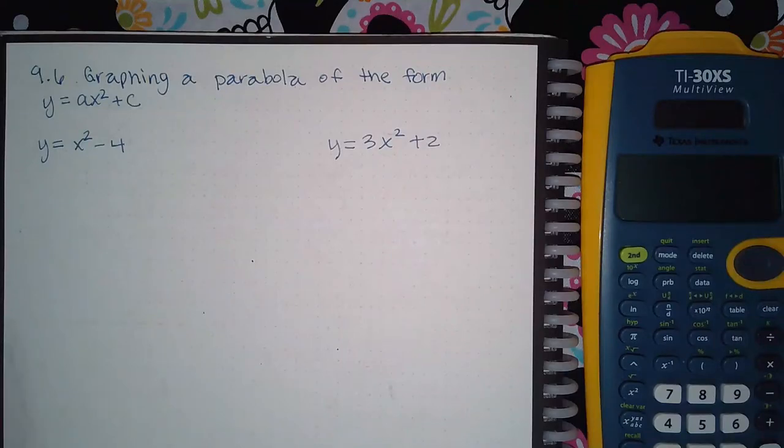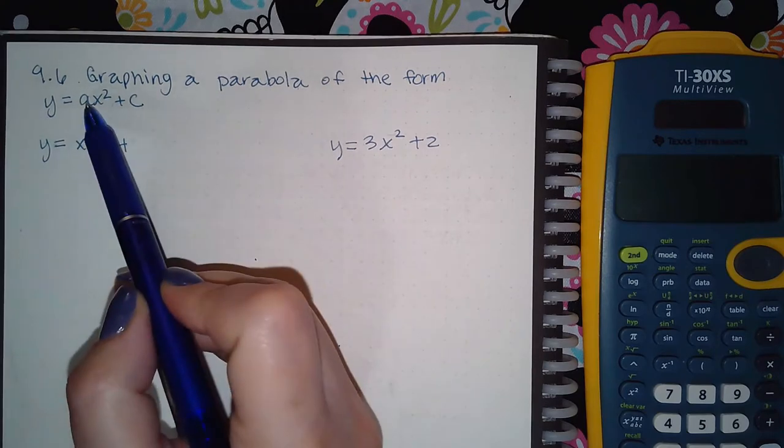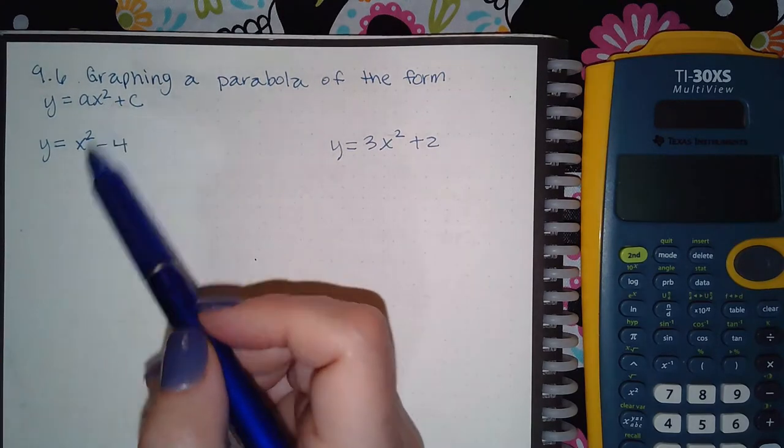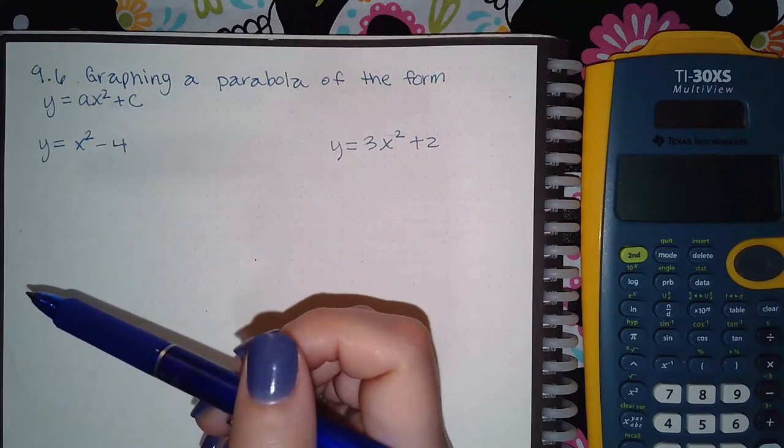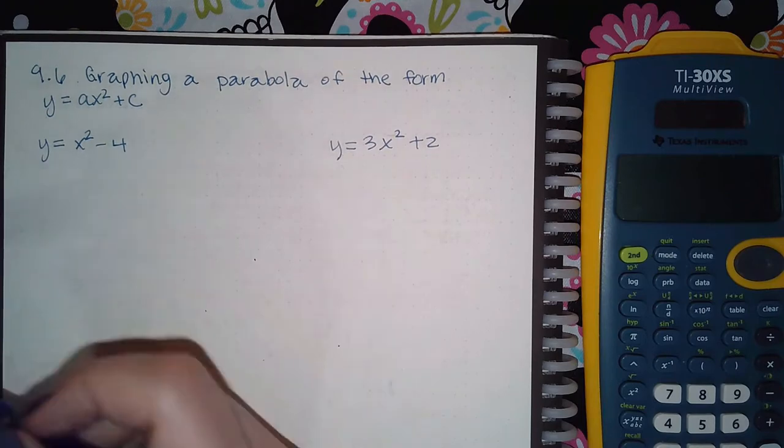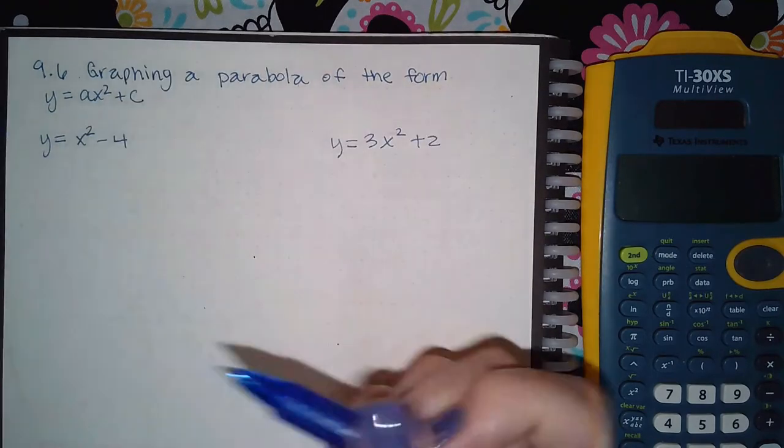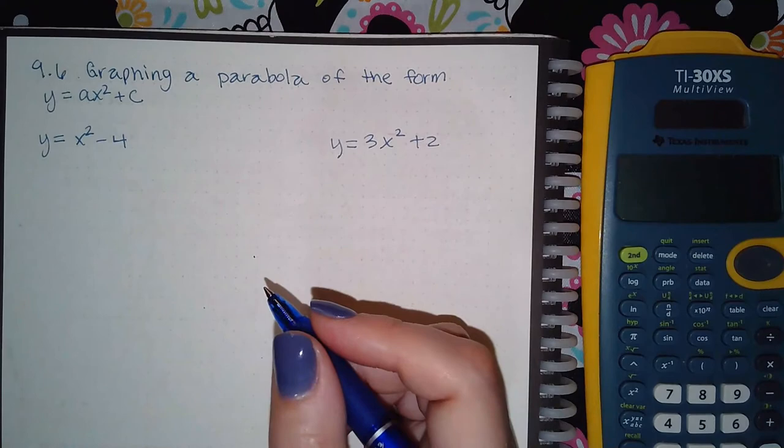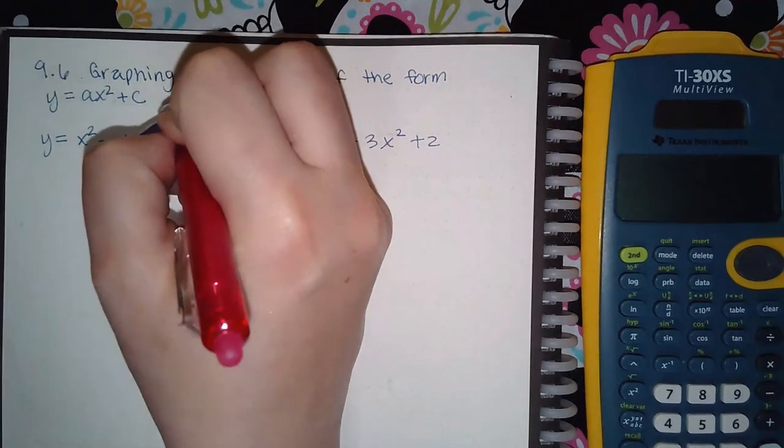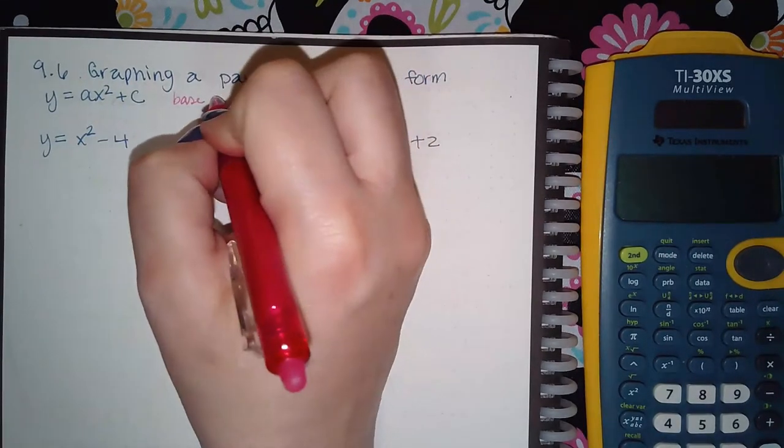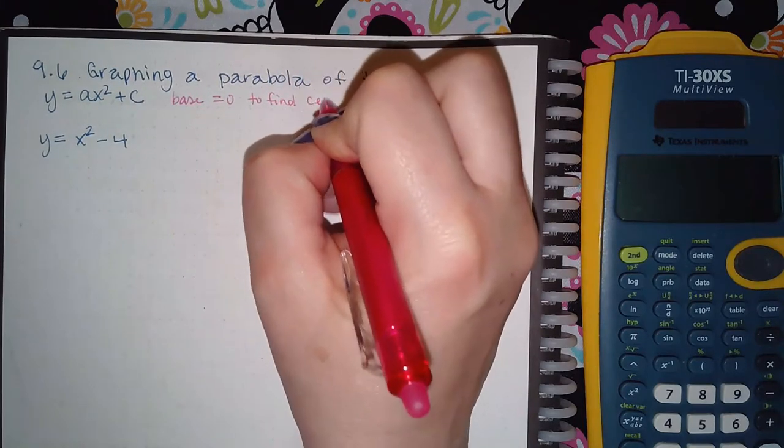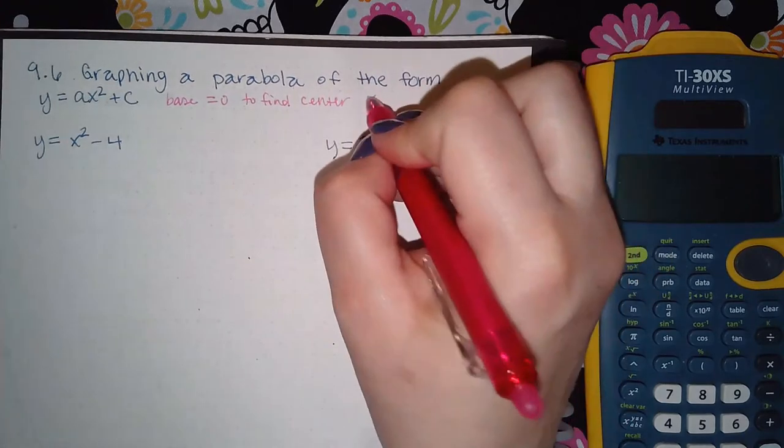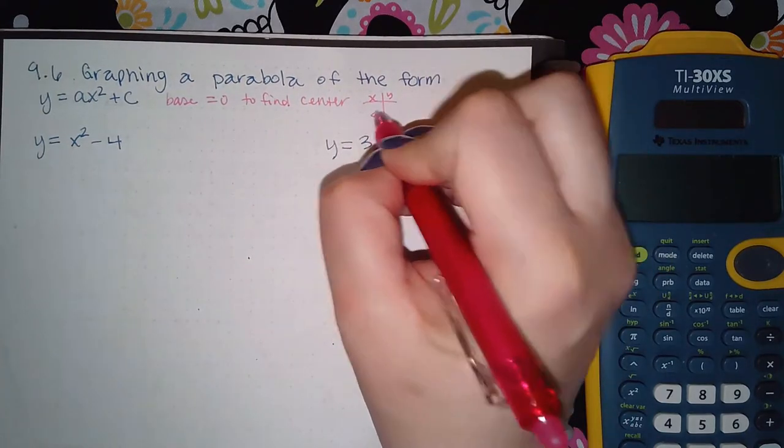Okay, here we have 9.6, a parabola of the form y equals ax squared plus c. It's the same thing as the previous topic if you happen to watch that previous topic video. What we do is we take the base and we set it equal to zero to find the center.